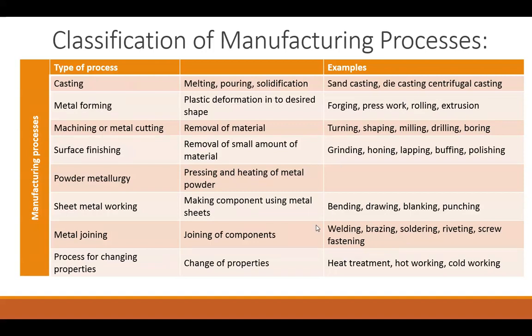The first classification is the Casting Process. It is the process of melting, pouring and solidification of the raw material to convert it into the desired shape and size. Melting is the first step wherein raw material is melted in the furnace. Then this molten metal is poured into mold cavities of the desired shape. The mold solidifies and the solidified component is your finished product. Different methods of casting are Sand Casting, Die Casting, and Centrifugal Casting.